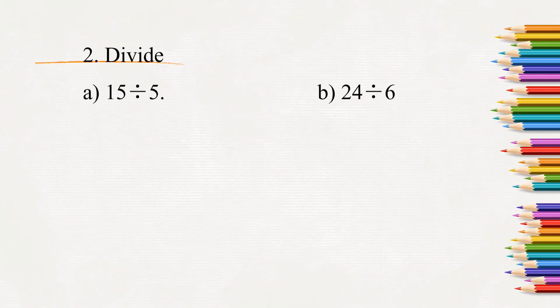Next question, divide. 15 divided by 5. 5 what times is 15? 5, 3 times is 15. So 15 divided by 5 equals 3. Here 24 divided by 6. 6 what times is 24? 6, 4 times is 24. So 24 divided by 6 equals 4.